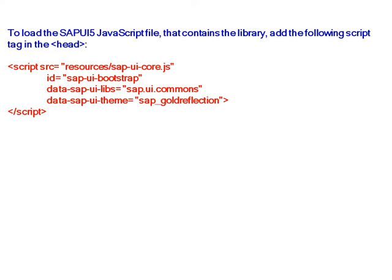To load the SAP UI5 JavaScript file that contains the library, add the following script tag in the head — that is the bootstrap section. SAP UI5 core.js, the id bootstrap, the required libraries, and the required theme.